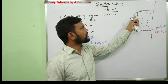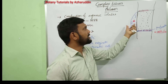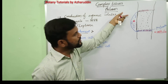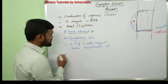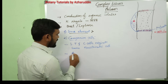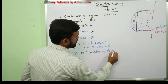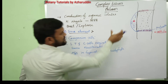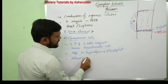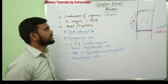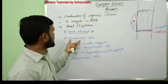One or more companion cells are associated with each sieve tube. In some species, only a single companion cell is associated with a sieve tube; in others, more than two companion cells are associated. Companion cells are absent in gymnosperms and pteridophytes. Instead of companion cells, gymnosperms have albuminous cells.